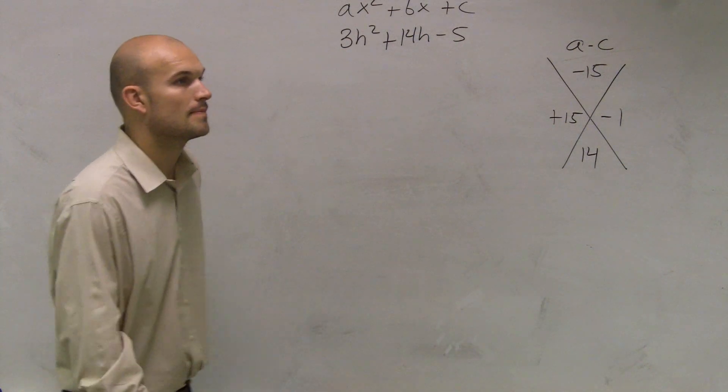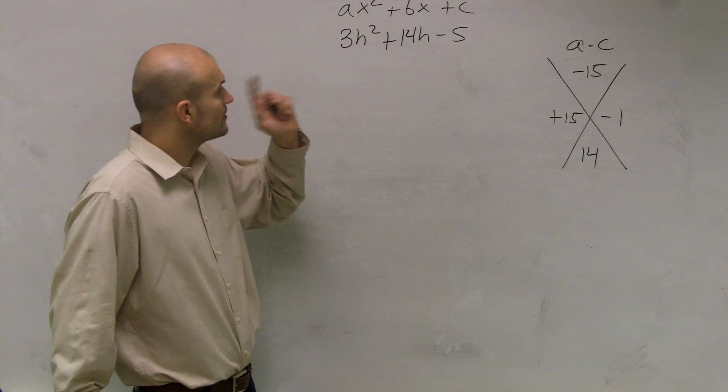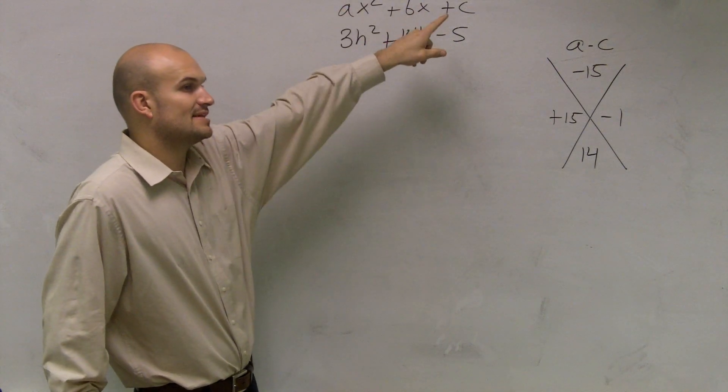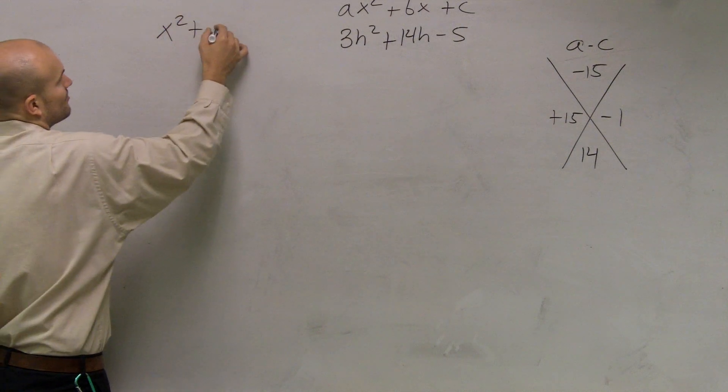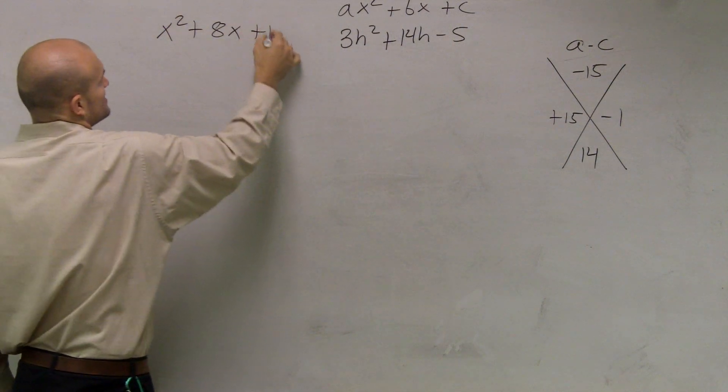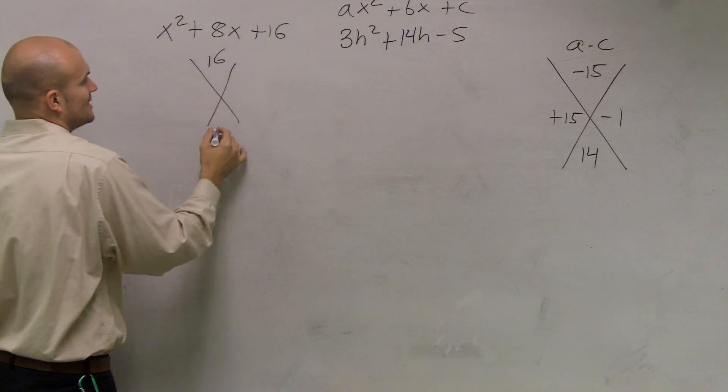How did you get negative 15 when it's negative 12? Remember, it's always a times c. When we did the other problems, let's say if I did this. It's x squared plus 8x plus 16.